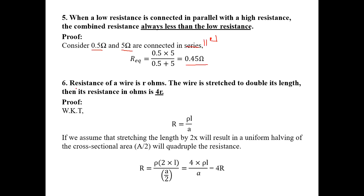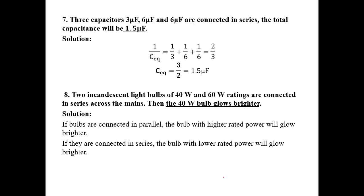Problem: The resistance of a wire is R ohm. The wire is stretched to double its length — find its new resistance. Using R equals rho L divided by A: if length doubles to 2L, the area becomes A/2. Substituting gives 4 times rho L divided by A, which equals 4R. The answer is 4R.